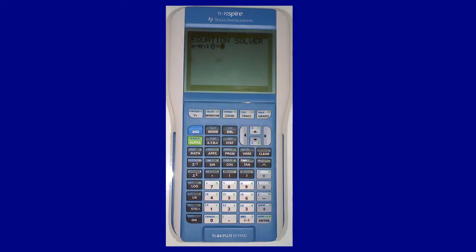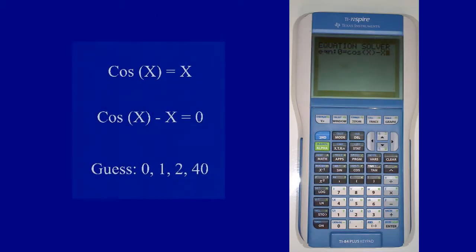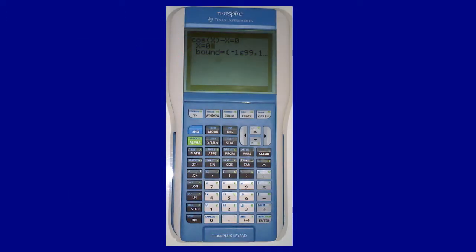Start by returning to the solver screen. If there is an equation already plugged into solver from previous use, you can erase it by pressing CLEAR. Solve cosine x equals x for zero, then plug it into the solver. Guess zero and press ALPHA ENTER to start solver.